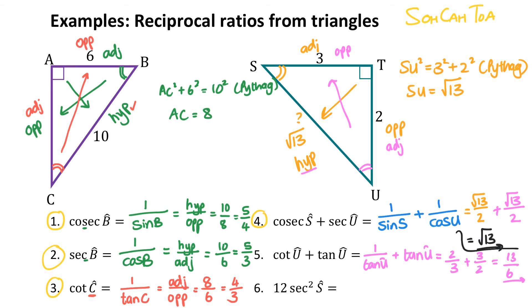The last question is asking for 12 times sec squared of S. That will be 12 times by 1 out of cos of S, all squared. Cos of S is 3 out of root 13, so that will be root 13 out of 3, squared, giving 52 out of 3.